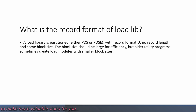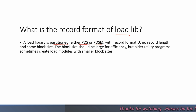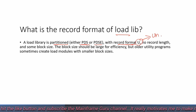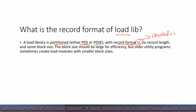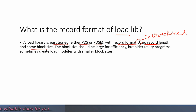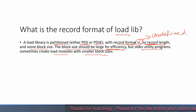What is the record format of a load library? A load library is a partitioned dataset — a PDS or PDSE — with extended format. It has a record format of U, meaning undefined. It has no fixed record length and has a block size that should be large for efficiency. Older utility programs sometimes create load modules with smaller block sizes.